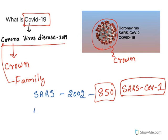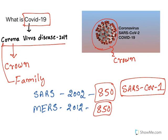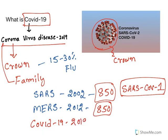After that, MERS — Middle East respiratory syndrome — affected mankind in 2012 and caused around 750 deaths all over the world. Some common flu and cold are also caused by coronavirus families; at least 15 to 30 percent of common cold and flu is caused by coronaviruses. Our subject of interest, COVID-19, started in 2019, hence it is known as COVID-19.